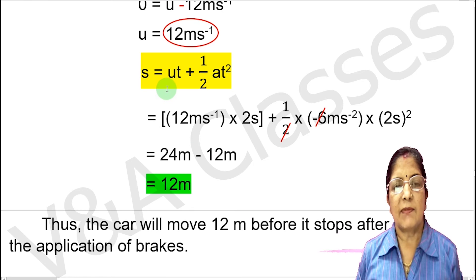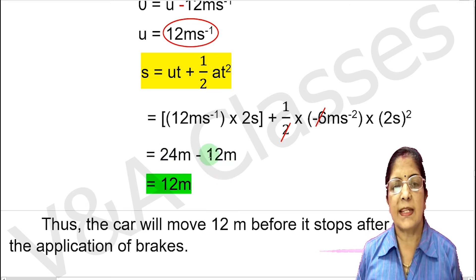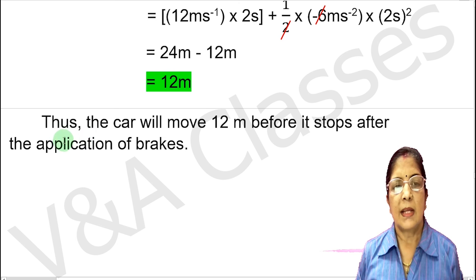Now we calculate the distance using S equals ut plus half at squared. Putting in the values: u is 12 meter per second, t is 2 seconds, a is minus 6 meter per second square. This gives S equals 24 meter plus half of minus 6 times 4, which equals 24 minus 12, giving S equals 12 meter. Thus, the car will move 12 meters before it stops after the application of brakes.